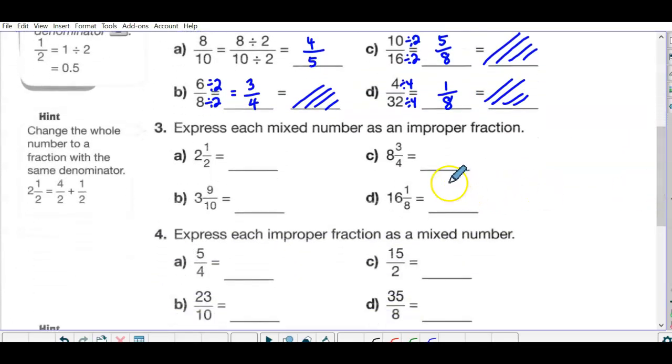Next one, express each mixed number as an improper fraction. So really what you're saying here is two and a half is two plus a half. Two with a denominator of two is four halves plus one half is five halves. What I think about is take the whole number, multiply it by the denominator, that's four, so that means there's four halves, and then I look at the numerator and I add. So this is multiplying, this is add, and you keep it over that denominator. So 3 times 10 is 30 plus 9 is 39 over 10. 8 times 4 is 32 plus 3 is 35 over 4. Always keep it over that denominator. 16 times 8 is 80, plus one is 129 over 8.